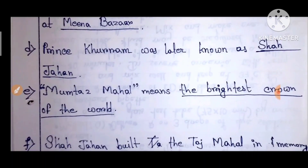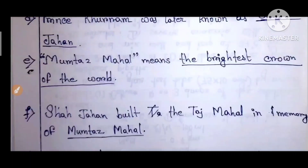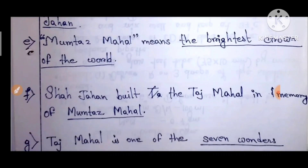Prince Khurram was later known as Shah Jahan. Mumtaz Mahal means 'the brightest crown of the world' — that is, the most radiant jewel of the universe.